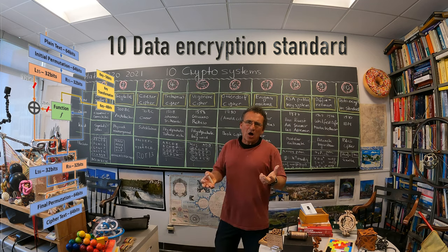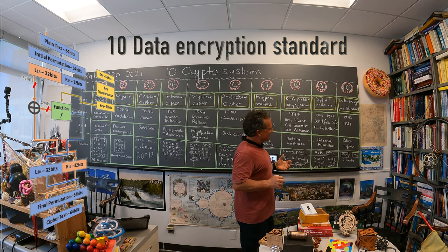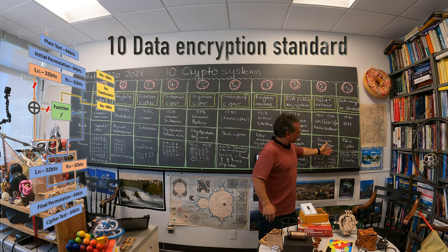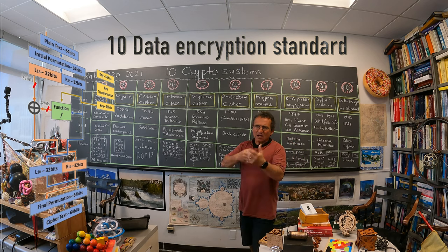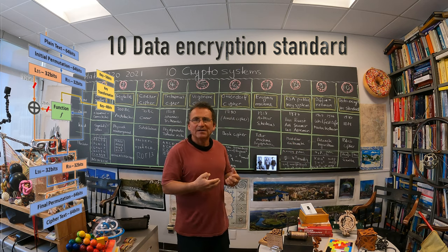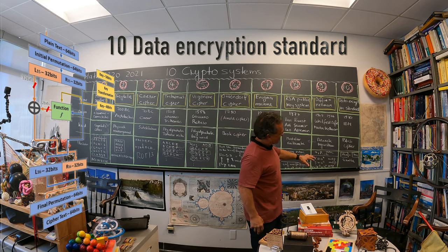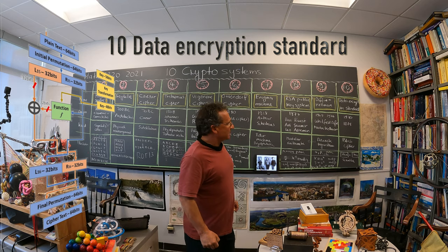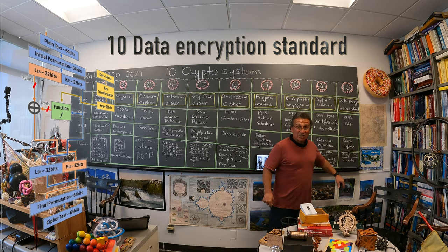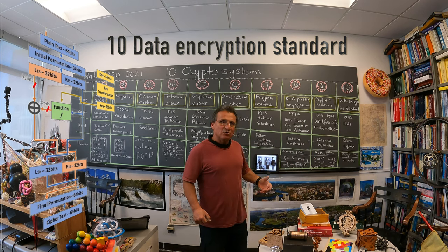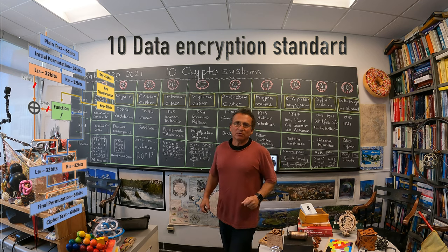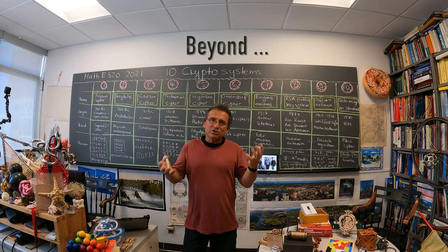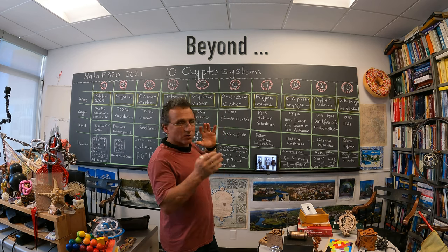Finally, number ten is the Data Encryption Standard (DES), which is from a mathematical point of view somewhat arbitrary. You take a block of text, scramble it with a relatively large key, and use a kind of discrete dynamical system that is chaotic in the continuum — assuming it also randomly scrambles things in the discrete setting. However, DES was actually hacked; with sufficient computing power today, you can read these codes.